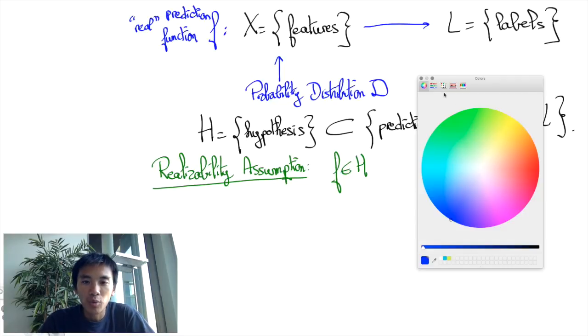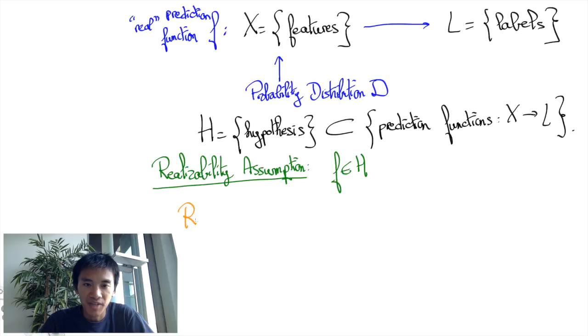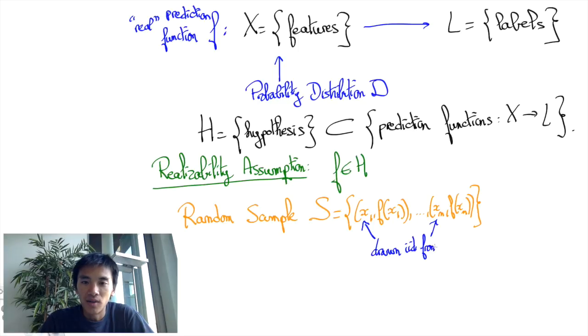Finally, we assume that we are given a random sample set of data: x1, f of x1, x2, f of x2, and so on until xn, f of xn. So this sample set has size n, and the x's are drawn i.i.d. from distribution D.